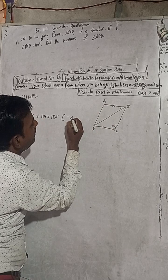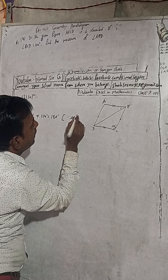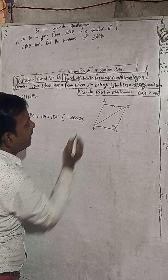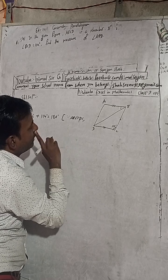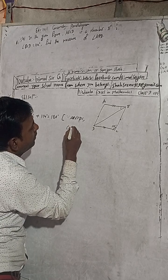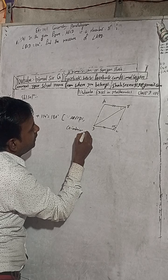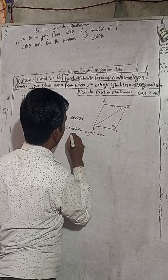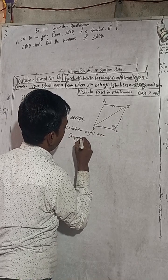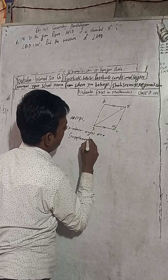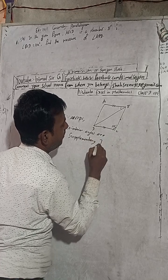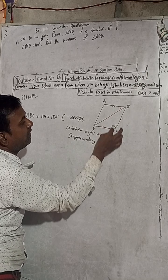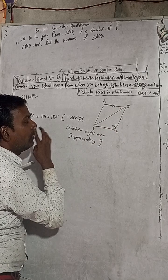AB is parallel to DC, and co-interior angles are supplementary. Supplementary meaning is 180 degrees. These are co-interior angles, also called co-interior or pointer angles.